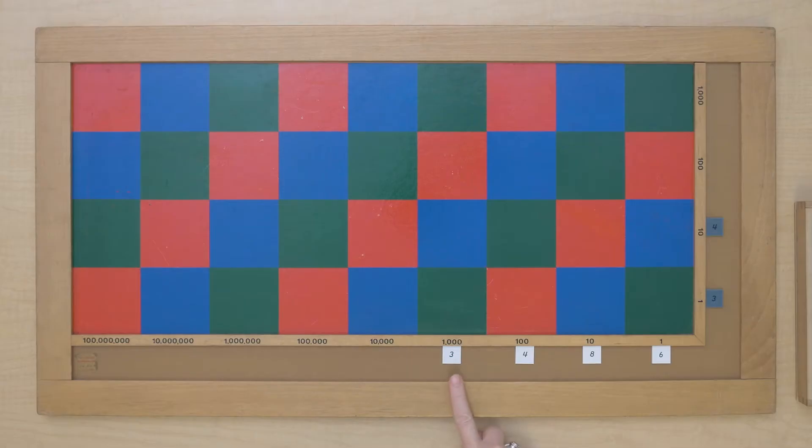Today we're going to do another multiplication problem on the checkerboard, but I'm going to show you something new. So let's get started. We are going to multiply 3,486 times 43.